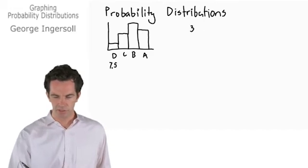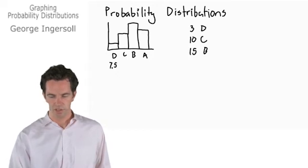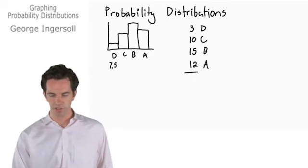We had 3 D's, 10 C's, 15 B's, and 12 A's. That equals 40 total.